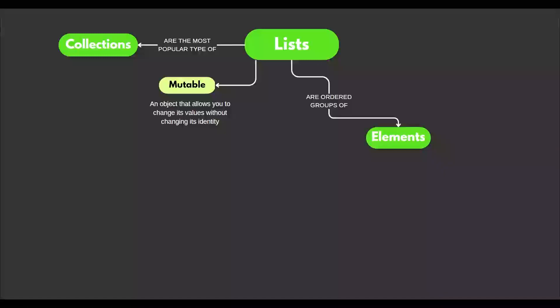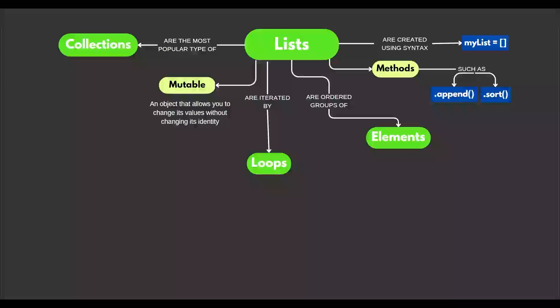Lists are ordered groups of elements. Lists are iterated by loops. Lists have methods such as append and sort. Lists are created using syntax, that is mylist equals to square brackets.